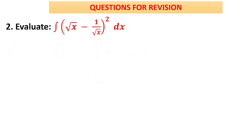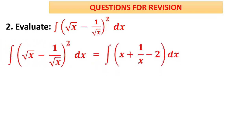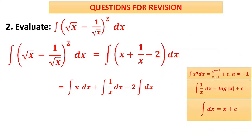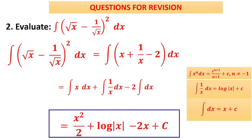Problem 2: evaluate ∫(√x − 1/√x)² dx. Expand the bracket: (√x)² − 2·√x·(1/√x) + (1/√x)² = x − 2 + 1/x. This gives ∫x dx − 2∫dx + ∫(1/x)dx. Applying the three formulas — power formula, ∫dx, and ∫(1/x)dx — we get x²/2 − 2x + log x + c. Similarly, if a whole cube is given, expand using the (a−b)³ or (a+b)³ formula accordingly.